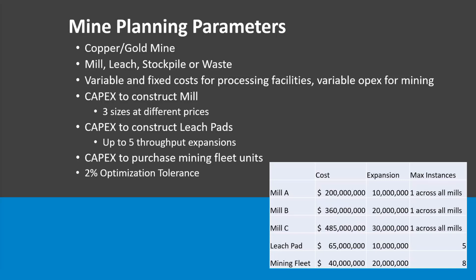All of these runs have been run with a 2% optimization tolerance. So later on when we look at some results, if the third digit is approximately the same, you can consider those results to be essentially the same.